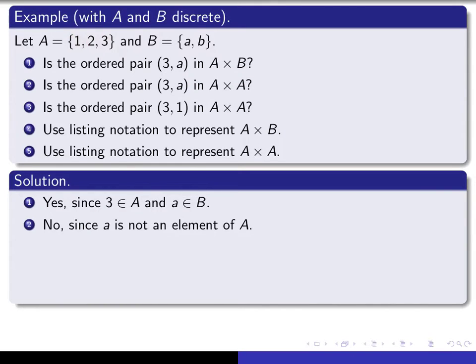But is the ordered pair (3, 1) in A × A? Yes, it is, because 3 is in A and 1 is in A, so we can form (3, 1), and notice that that's considered to be different from the ordered pair (1, 3).